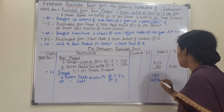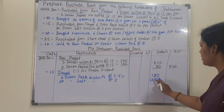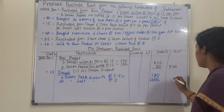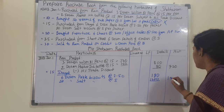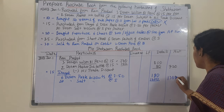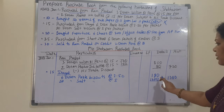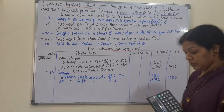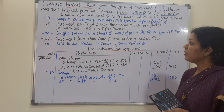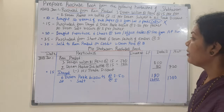The total for the January 15th entry from Dayal: 180 + 1200 = 1380 rupees. We write this in the outer column. The 15th entry is now complete.